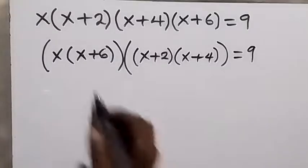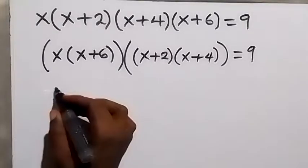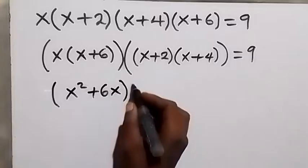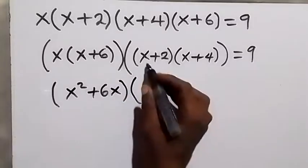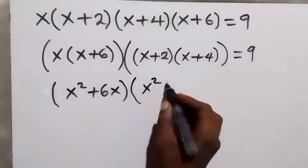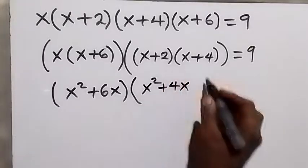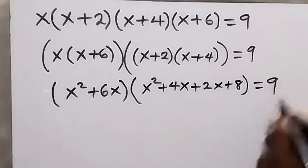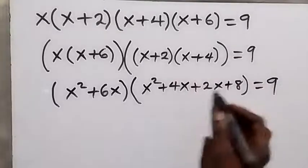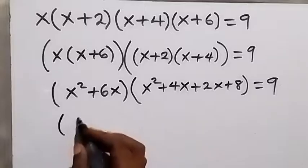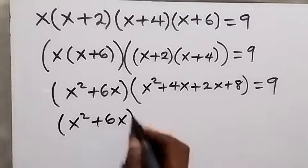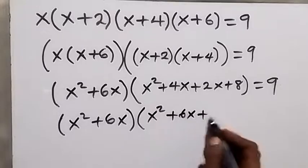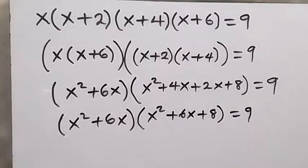From here, when we expand what we have in the first bracket, this becomes x squared plus 6x. Then the second bracket we expand as well: x multiplied gives x squared plus 4x, then 2 multiplied gives plus 2x plus 8, which equals 9. In the next step, let's add the like terms: we have x squared plus 6x in the first bracket, and x squared plus 6x plus 8 in the second, which equals 9.